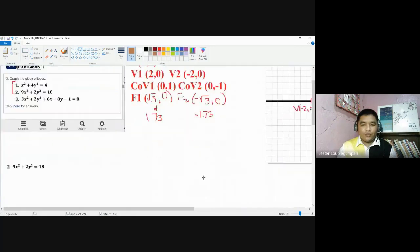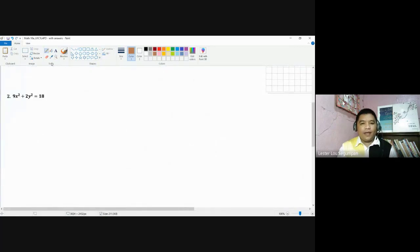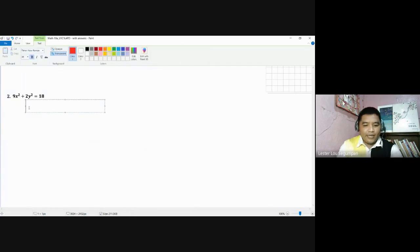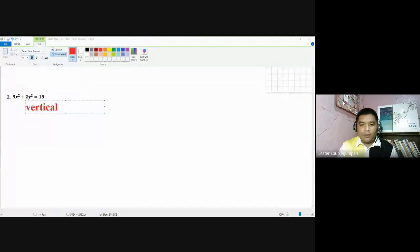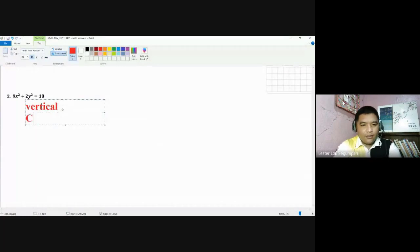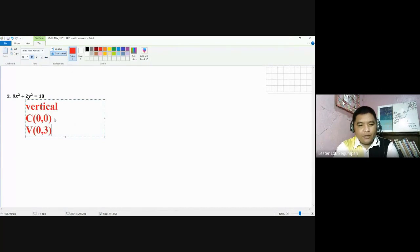Going to number 2, we also have solved already the values or necessary values for this in our previous practice exercise. This is a vertical position, vertically. You may want to review the video. The center is still at the origin. The vertices are at 0, 3, that's your vertex number 1. Or you could just interchange them, nevertheless. And vertex number 2 is at 0 and negative 3.